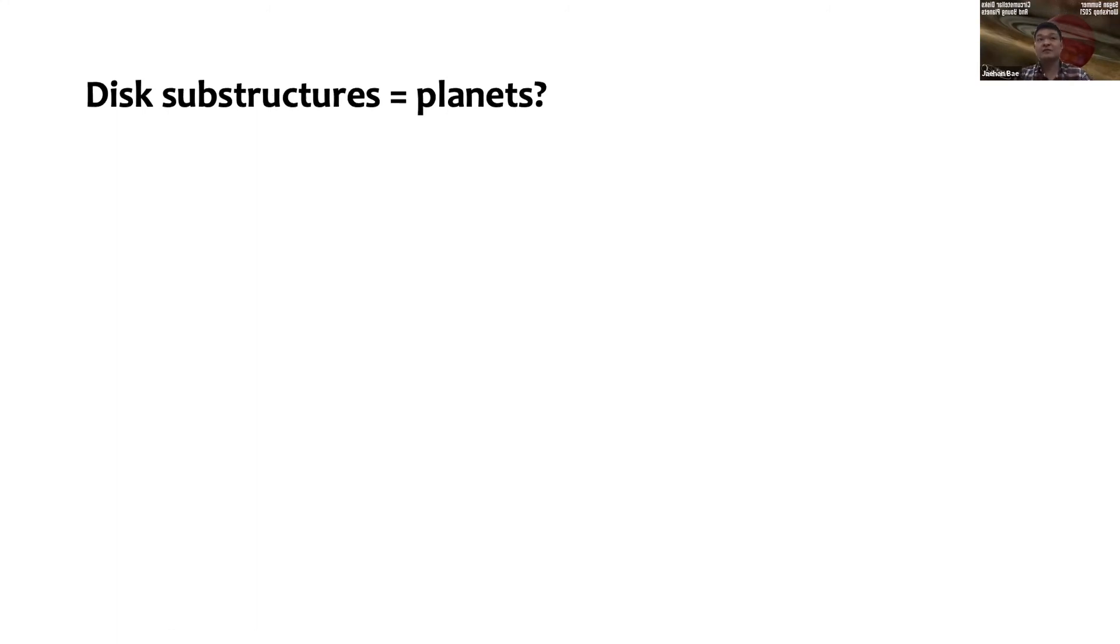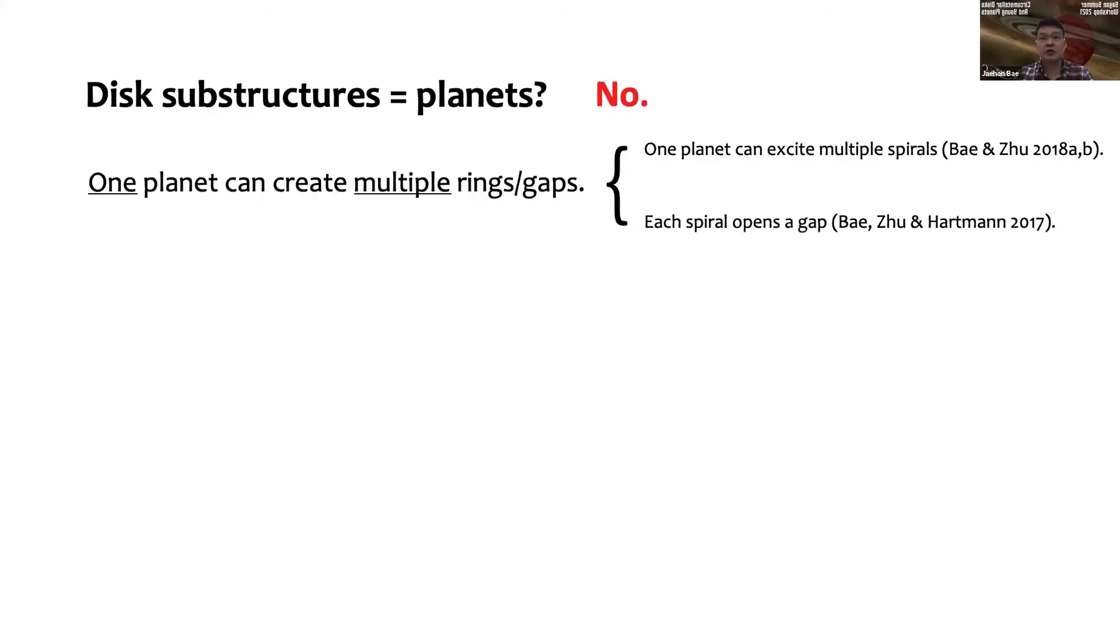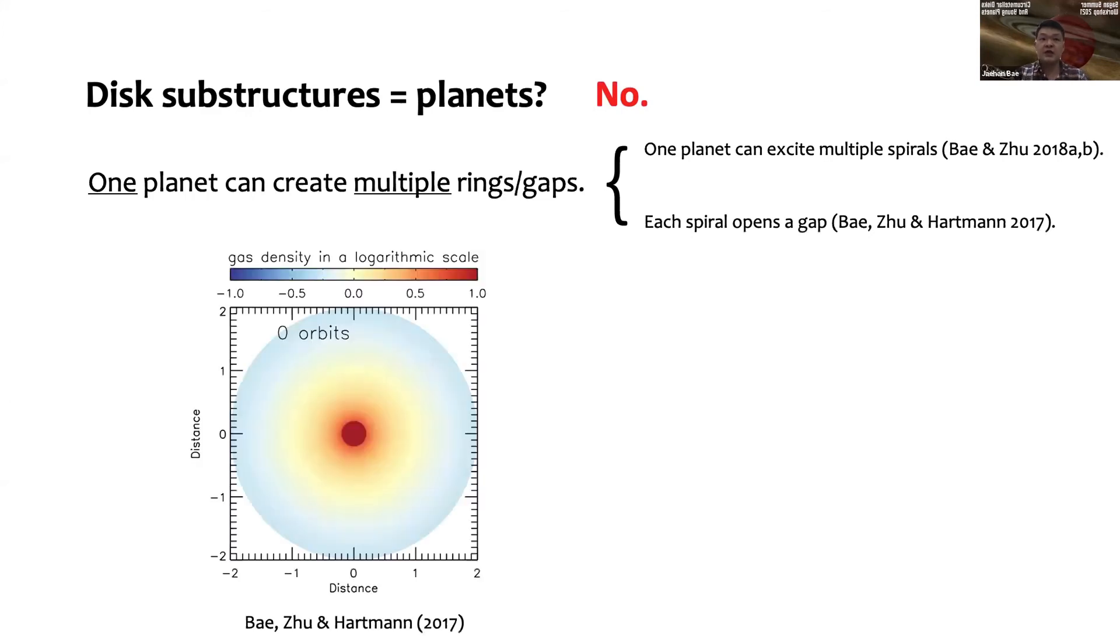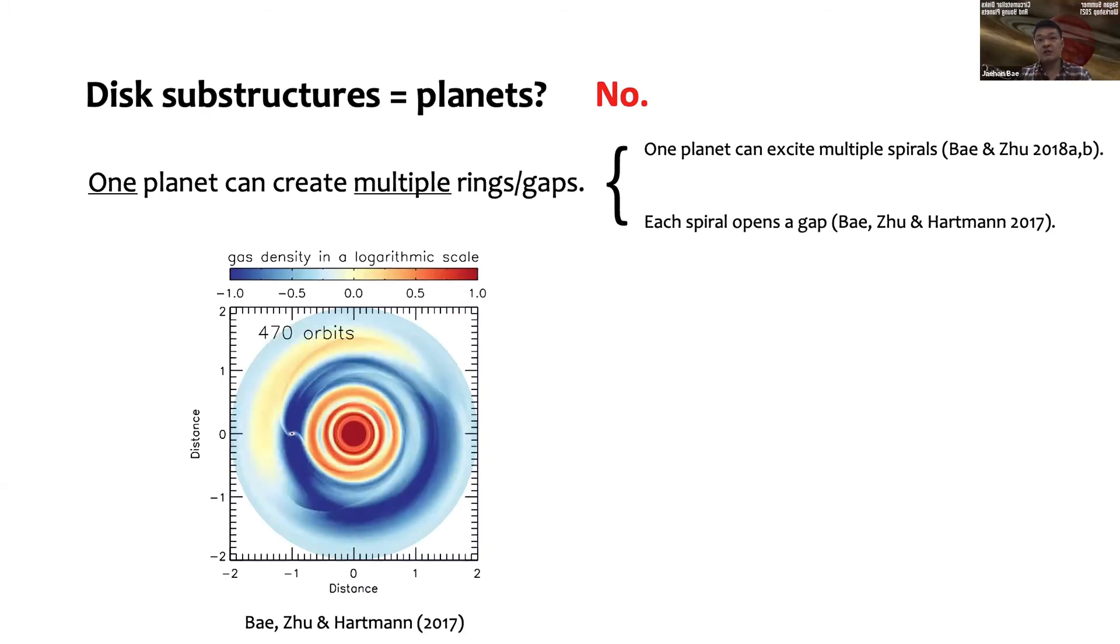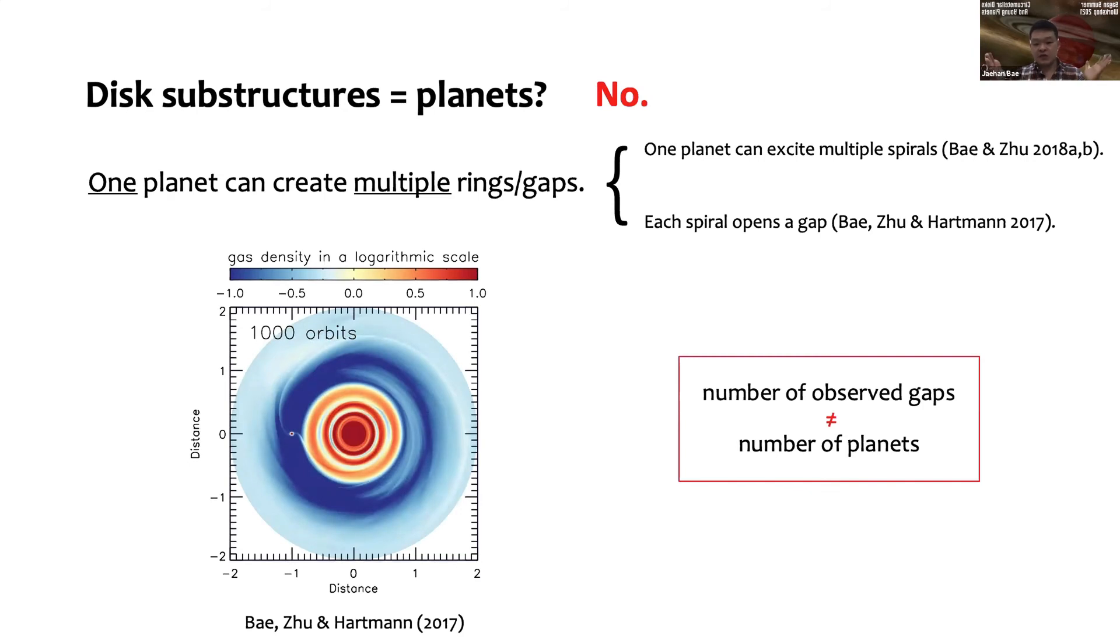For the last few minutes, I'd like to answer whether the fact that we see these substructures means that there are planets in the disk. The answer is of course no. I'm giving you just one particular example: one planet can create multiple rings and gaps. Here is a simulation again where I put a single planet, and it excites multiple spirals, and each of those spirals opens a gap.